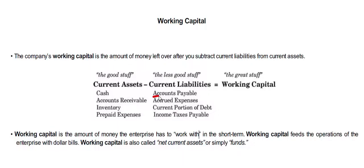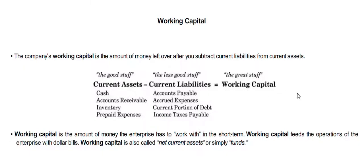Similarly, for current liabilities we are considering four items: accounts payable, accrued expense, current portion of long-term debt, and income tax payable. When you subtract current liabilities from current assets, it will result in working capital.